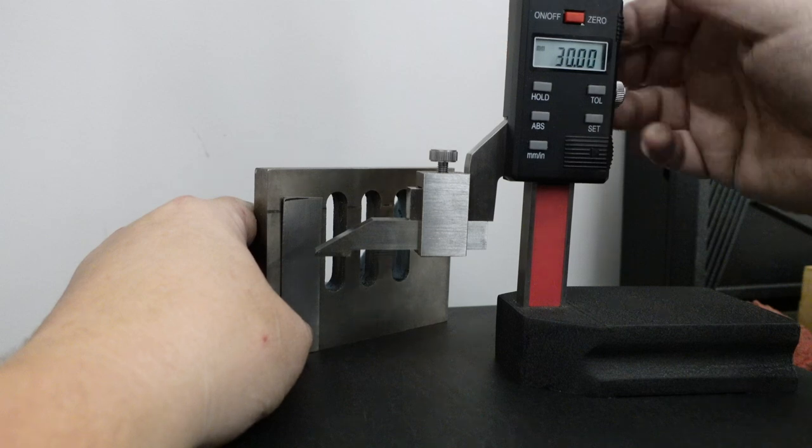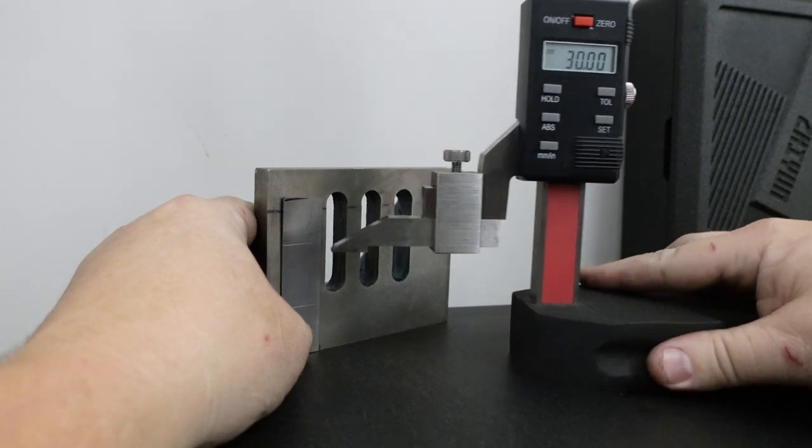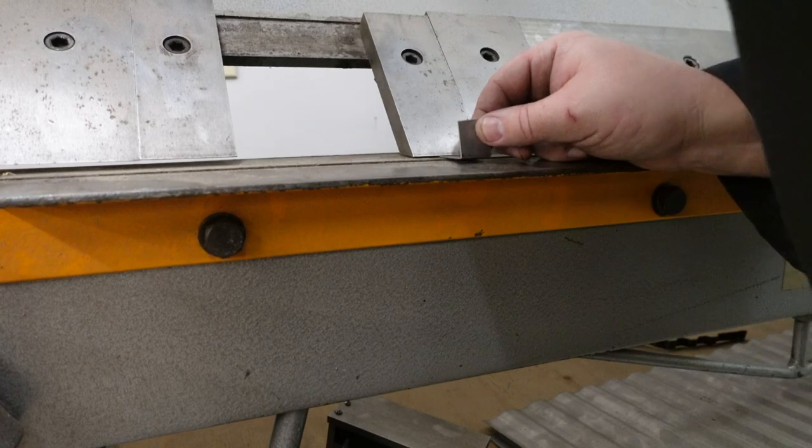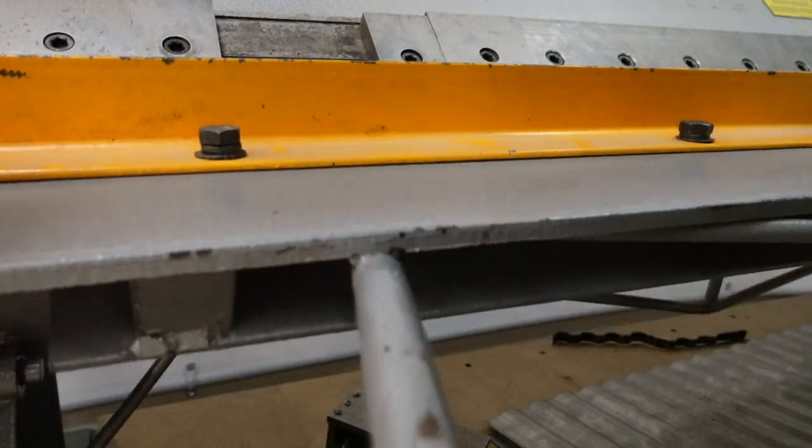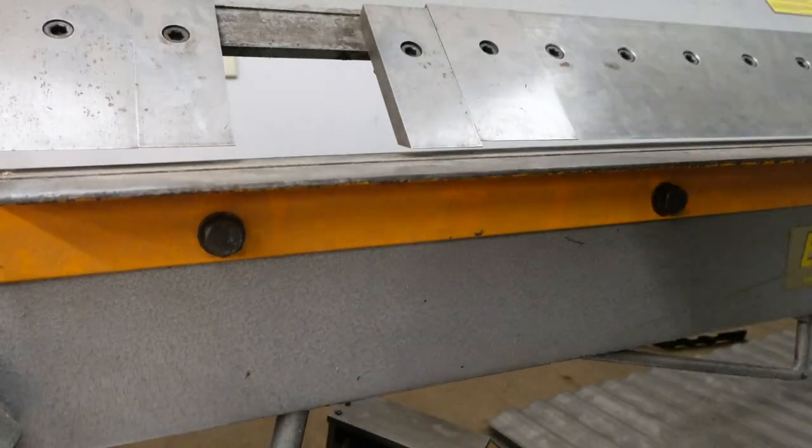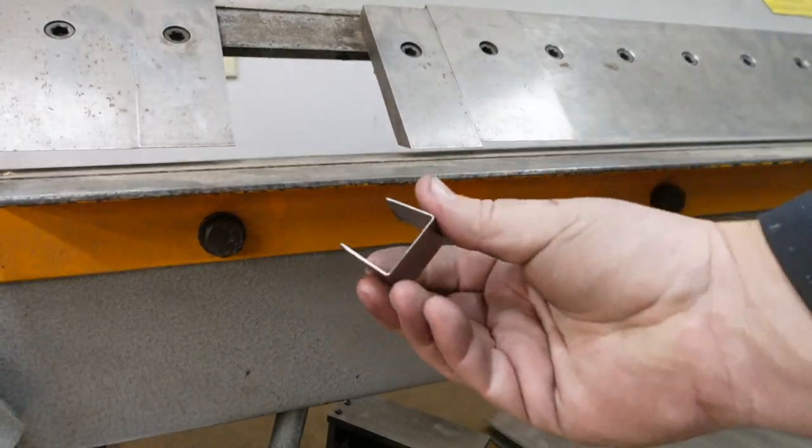I used a height gauge to describe lines on some test pieces, starting at 28mm apart. I bent those, then tried it on the body to see if it worked. After some iteration, I settled on 30mm as being the correct distance.